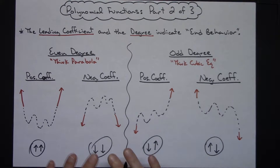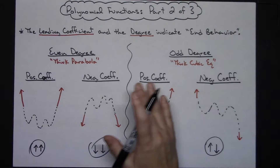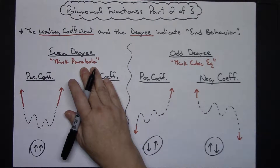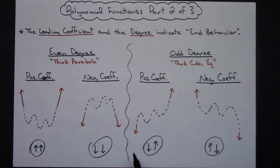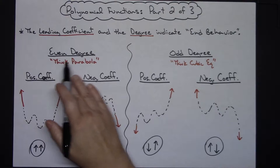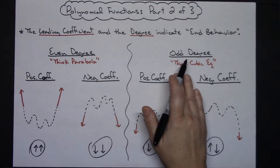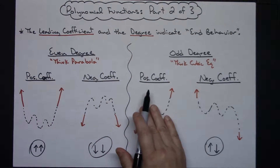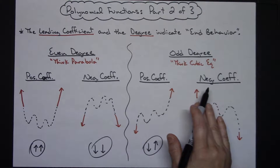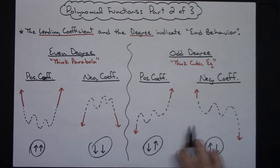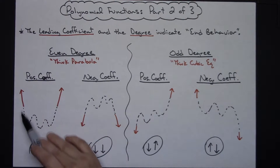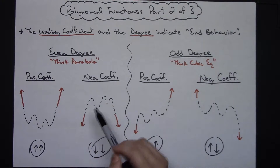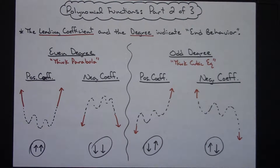This is definitely something you need to memorize, and it's all based on knowing your parabola and your cubic equation and what those graphs look like. Then you just determine: is it an even or odd degree? If it's odd, does it have a positive or negative leading coefficient? Same thing with the parabola — positive looks like an upright parabola, and a negative leading coefficient makes it look like an upside down one.